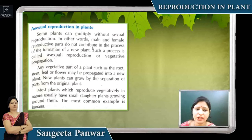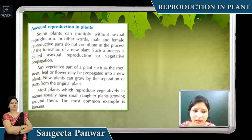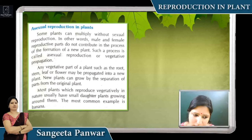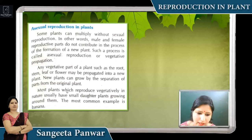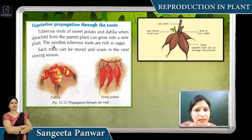In asexual reproduction, plants can be multiplied without sexual reproduction — that is, without male and female gametes. Roots, stems, leaves, and other parts of the plant reproduce and grow and develop into new plants. The new plant becomes separate from the original plant. Most plants that reproduce vegetatively naturally have small daughter plants growing around them — like a banana.